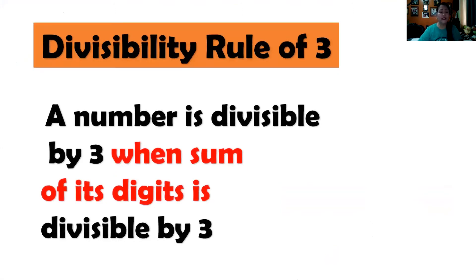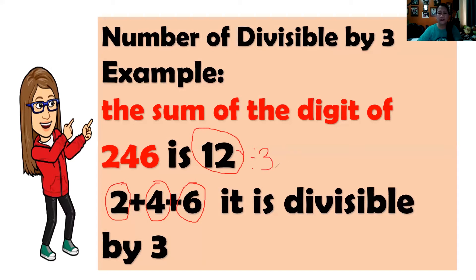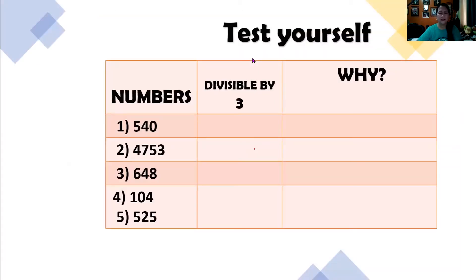We have the divisibility rule of 3. A number is divisible by 3 when the sum of its digits is divisible by 3. For example, 246: the sum of the digits is 2 plus 4 is 6, plus 6 is 12. So we check: 12 divided by 3 is 4, so 246 is divisible by 3.